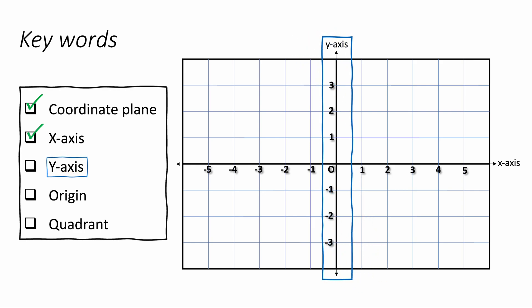Similarly, the y-axis is the axis going up and down. It is vertical, going up and down. And it's made from numbers, positive numbers and negative numbers going up and down.